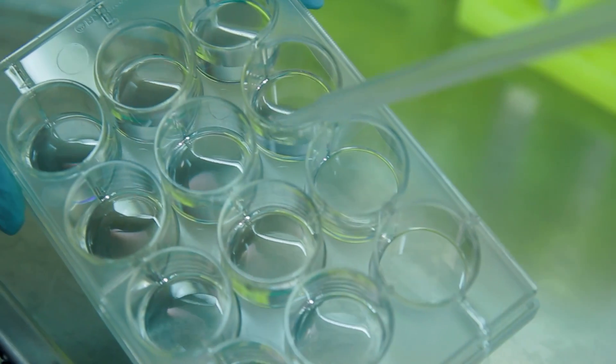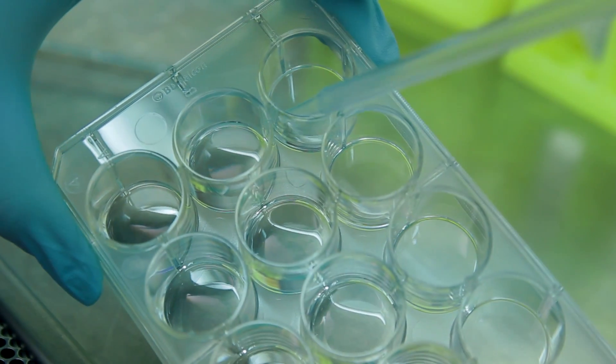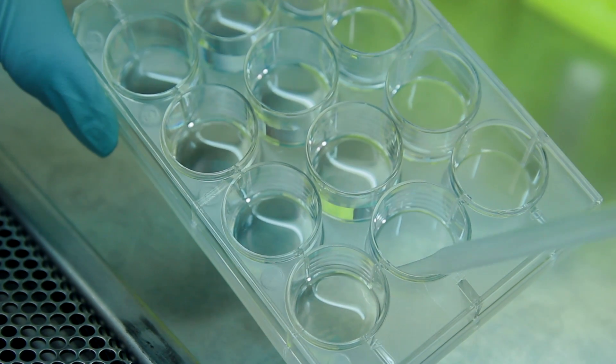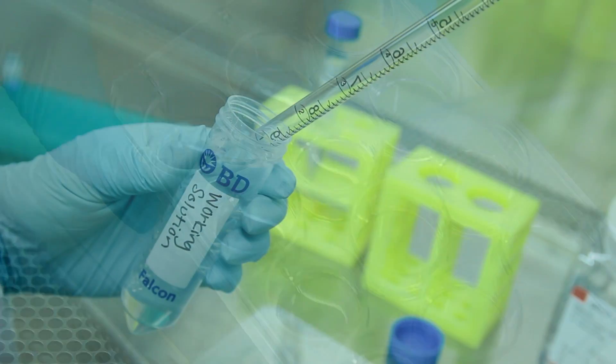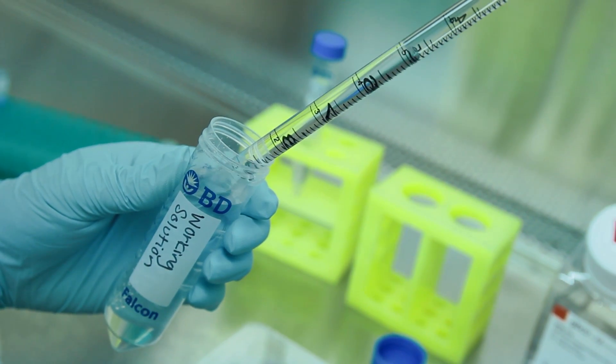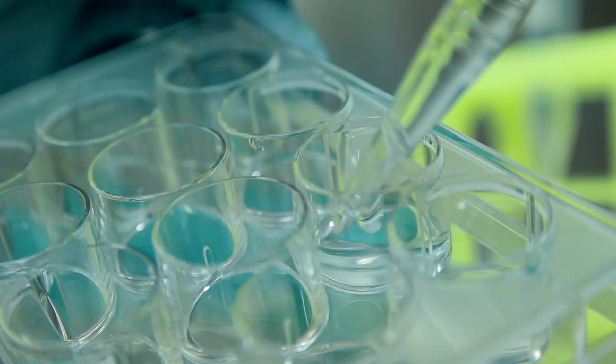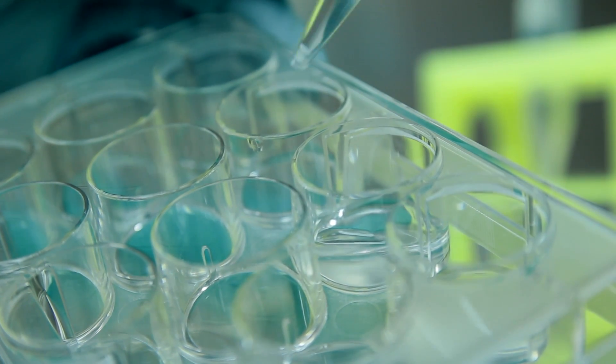Next, grab your sample plate and aspirate the PBS buffer from each well. Then, add 2 ml of the working solution, making sure there's enough volume to cover the bottom of each well.